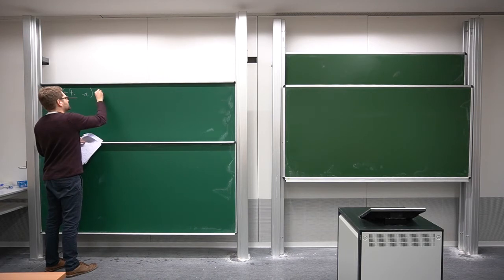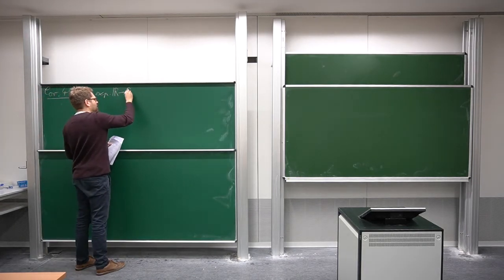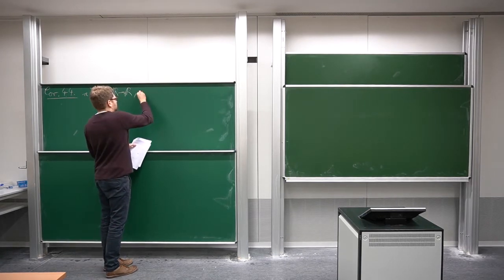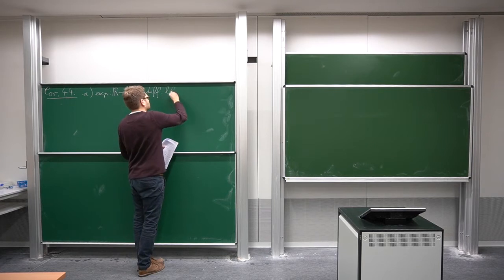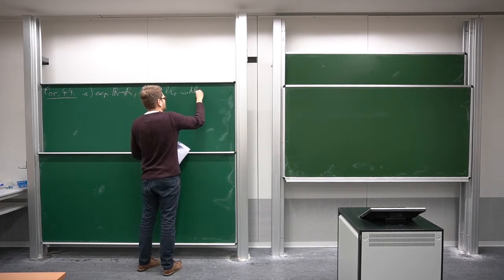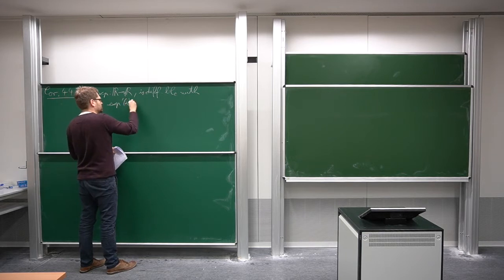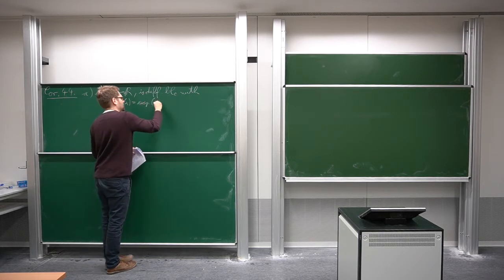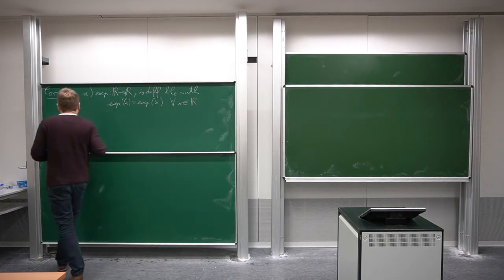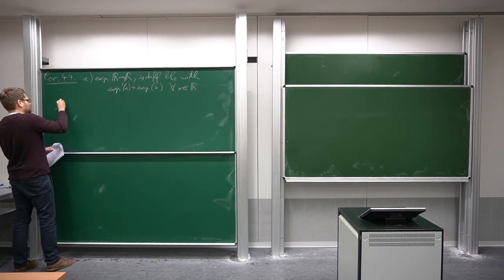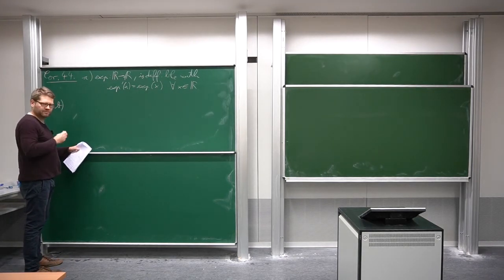First of all, let me just fix this once. Part a: if we just take the exponential function, this time c is a function from R to R. This is differentiable with derivative x prime of x equal to x of x for all x in R.